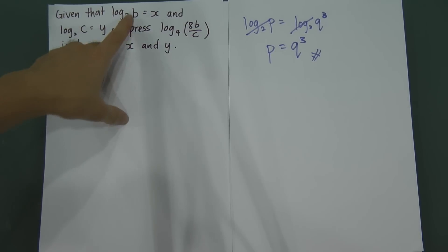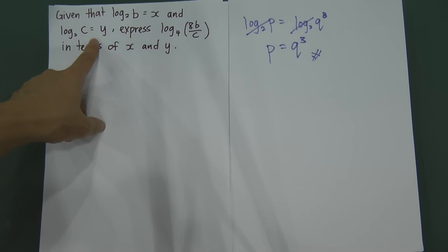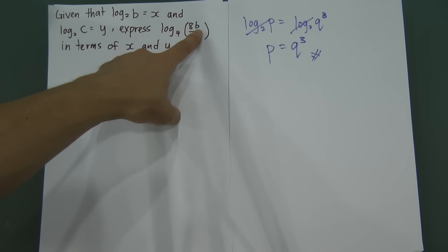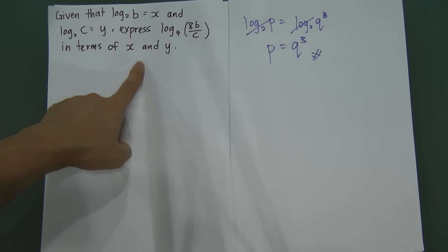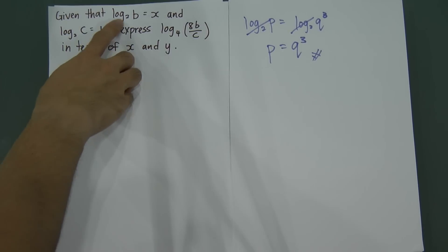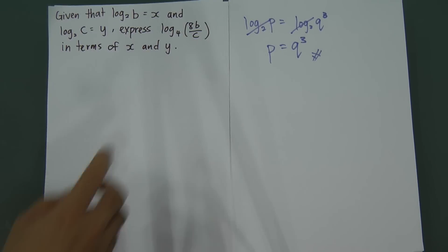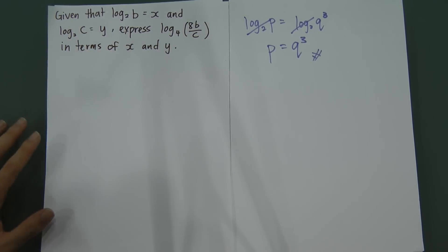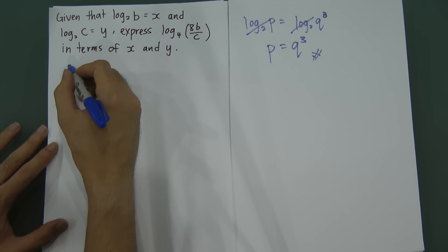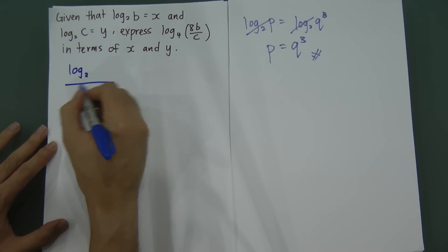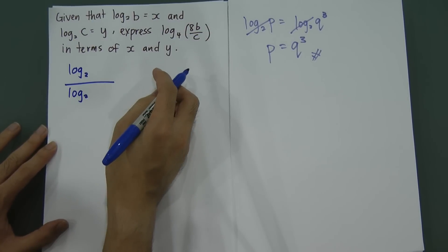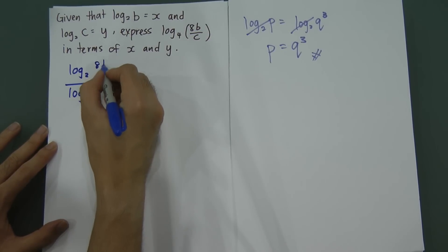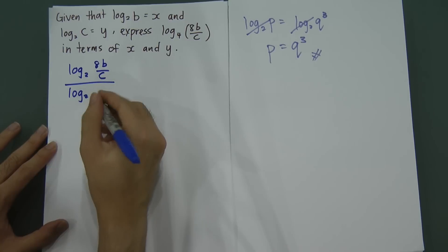Given that log₂B = x and log₂C = y, express log base 4 of (8B ÷ C) in terms of x and y. Here you face another challenge: you have base 2 and base 4, so you need to change base 4 to base 2. To change base, write log₂(8B/C) divided by log₂4, with the value on top and the base on the bottom — giving log₂(8B/C) ÷ log₂4.